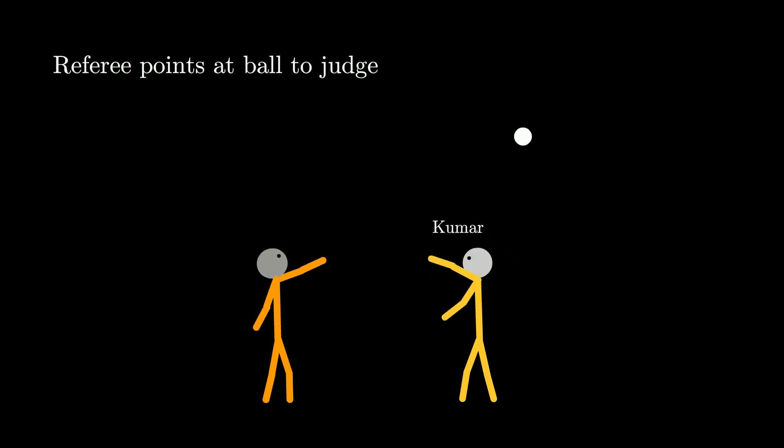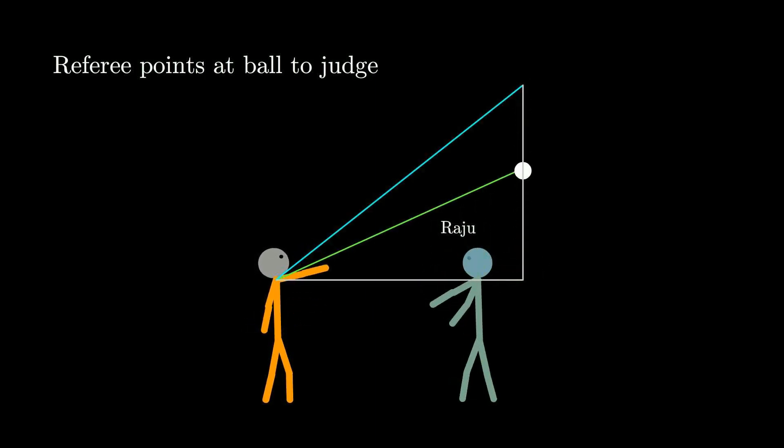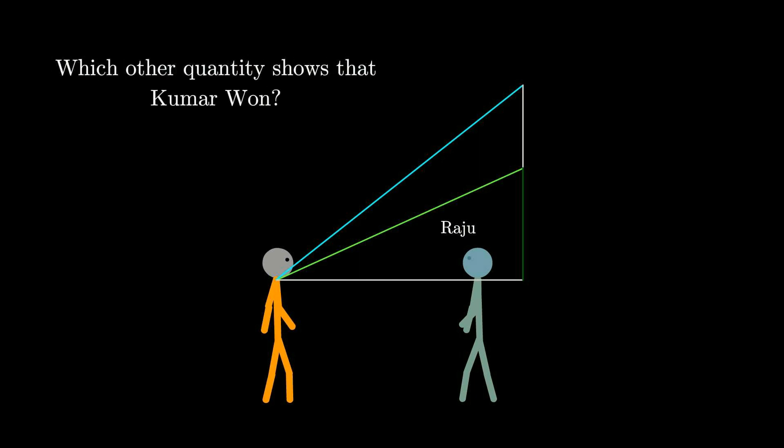Kumar throws the ball first. Ramu sees the ball go high in the air. Raju throws next. This time around, Ramu points his hand much lower. It is obvious to us that Kumar has won. Ramu's hand pointed higher for Kumar than for Raju. But wait, there was something else that also indicated that Kumar had won. It is another mathematical quantity which shows that Kumar had won easily. Can you figure it out?